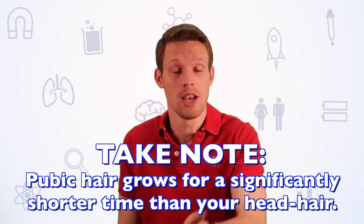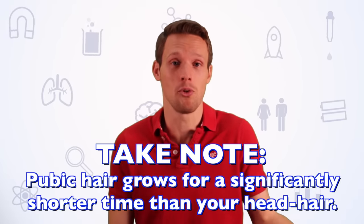And they're short because they grow for a lot less time than the hair on the rest of your body, that grows for around seven years. Whereas pubic hair only grows for six months, the hair follicle dies and it falls out.